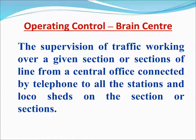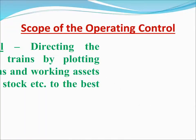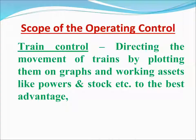The Operating Control is the brain center. It involves supervision of traffic working over a given section or sections of line from a central office, connected by telephone to all the stations and local sets on those sections. The scope includes train control: directing the movement of trains by plotting them on a graph and working assets like power and stock to the best advantage.